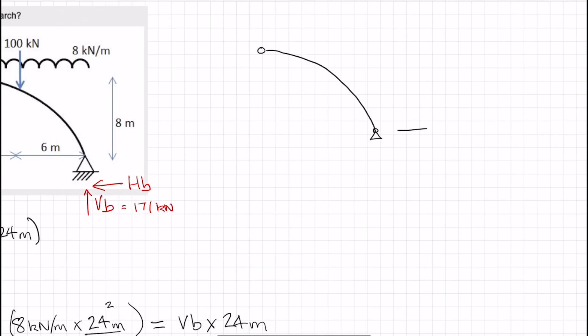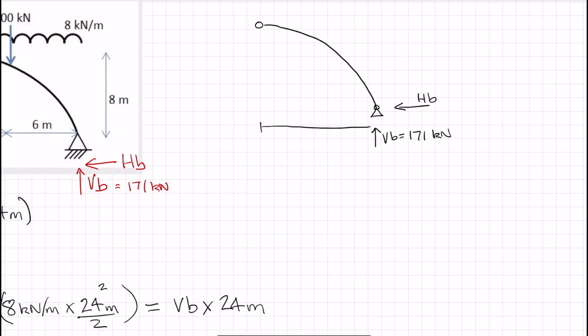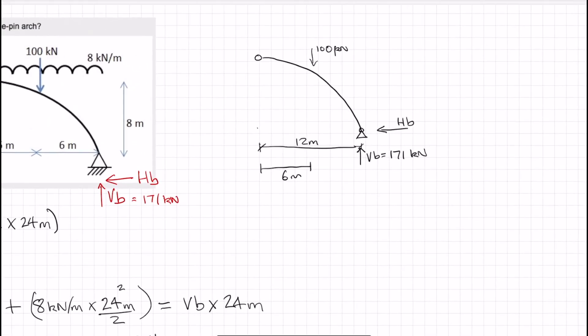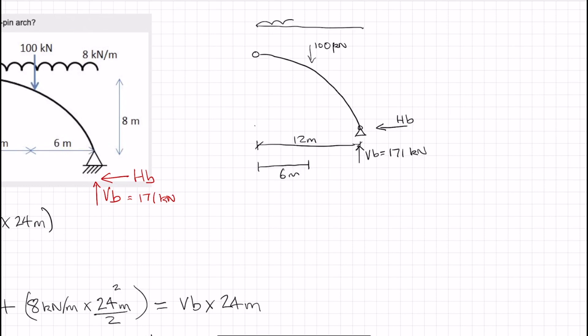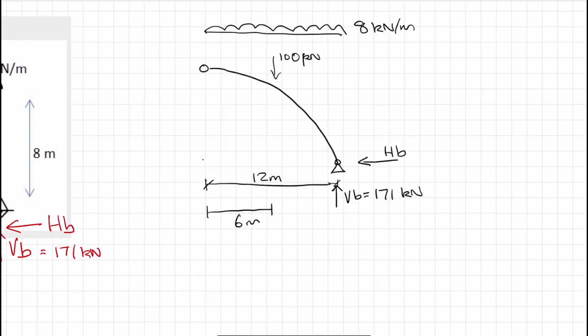So we have HB, which is still unknown. We have VB, which we know is 171 kilonewtons. That is now 12 meters. This force is 100 kilonewtons acting at 6 meters. And we have 8 kilonewtons per meter UDL. And now let's resolve the moments about that point X there. We know that because it's a pin, that moment there is going to be zero.